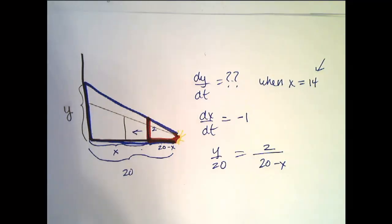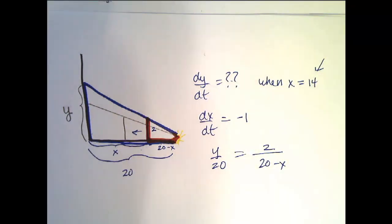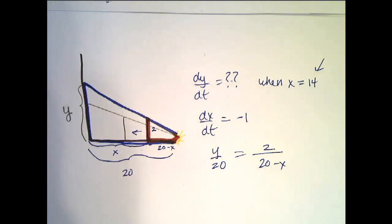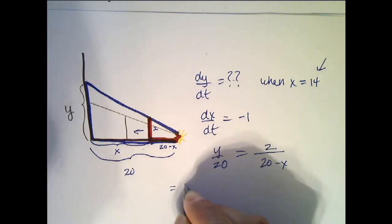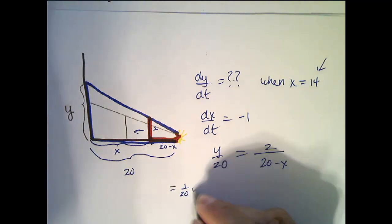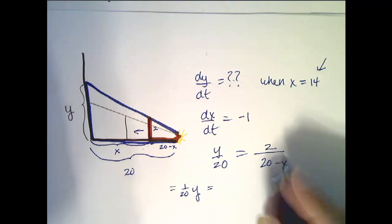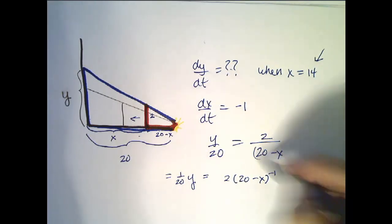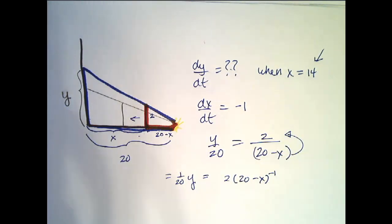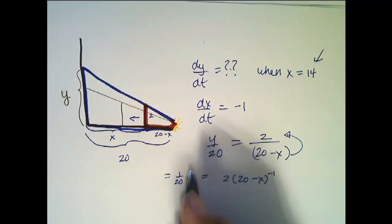Now we've done all the hard part. The only thing left now is to take the derivative of both sides with respect to time. So I'm going to change a few things just to make that easier. So this is really 1 over 20 times Y equals 2 times (20 minus X) to the minus 1. I just moved this factor up to the top so it has a negative exponent.